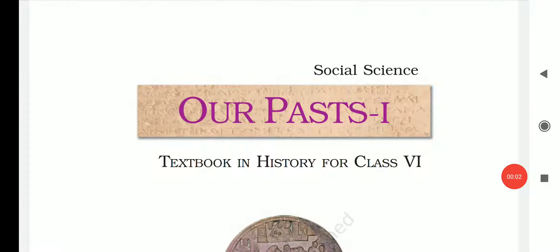Hi, in this class we are going to discuss about history for class 6 in CBSE. It will be our past, so you should have this book with you. The book is 'Our Past 1' — it's a textbook in history for class 6. It is also known as social science. In this class we will discuss what content is available in this book.